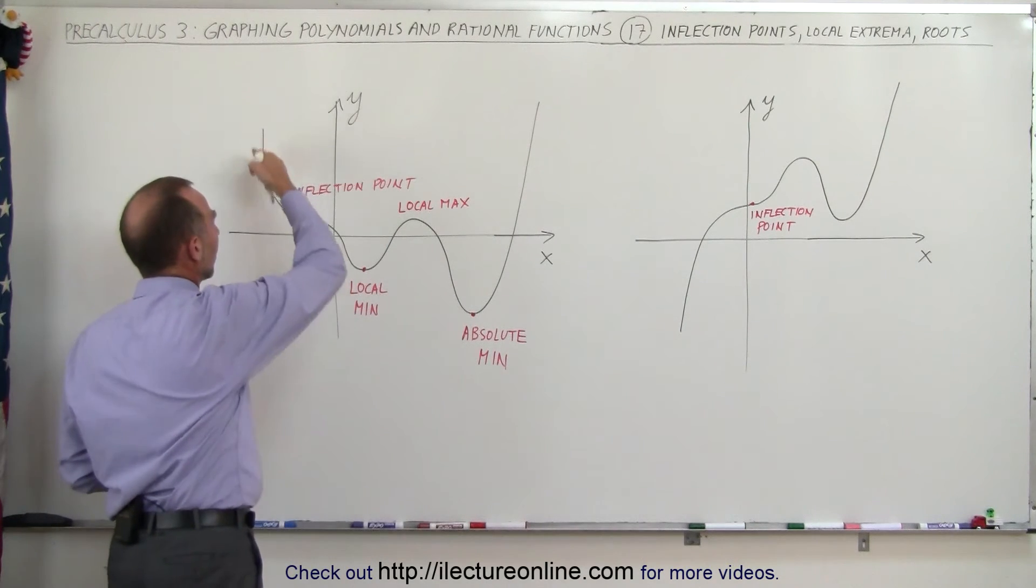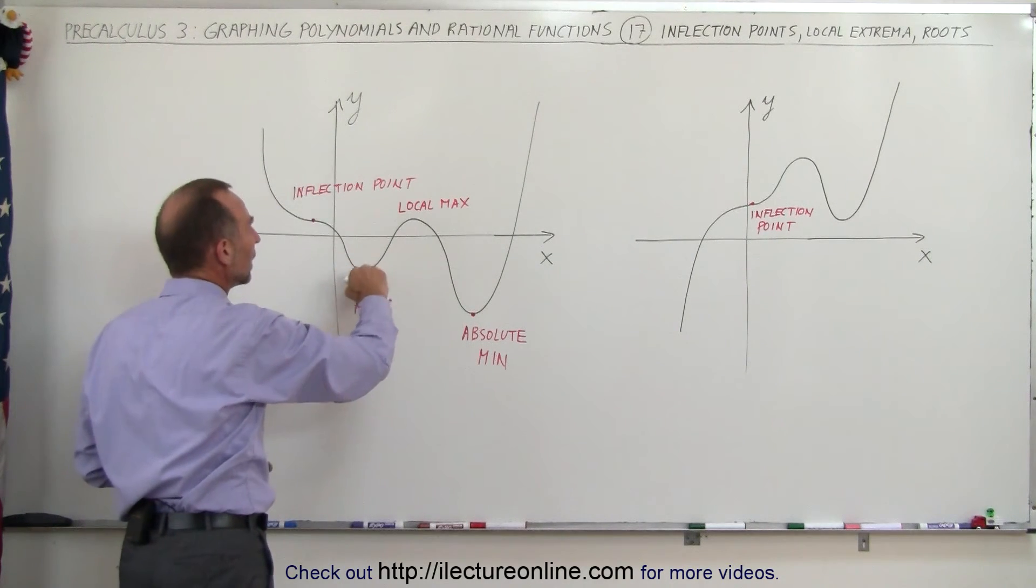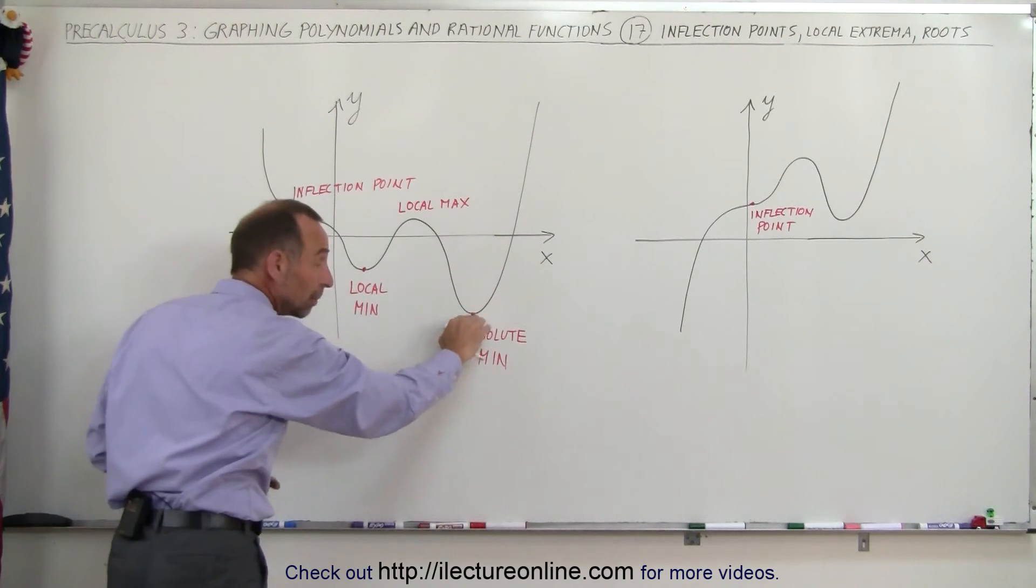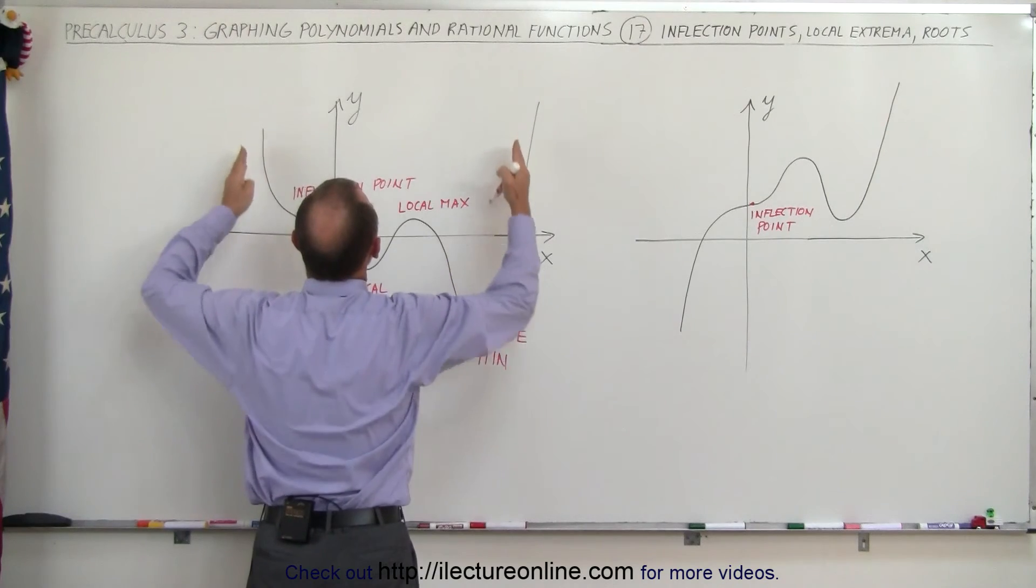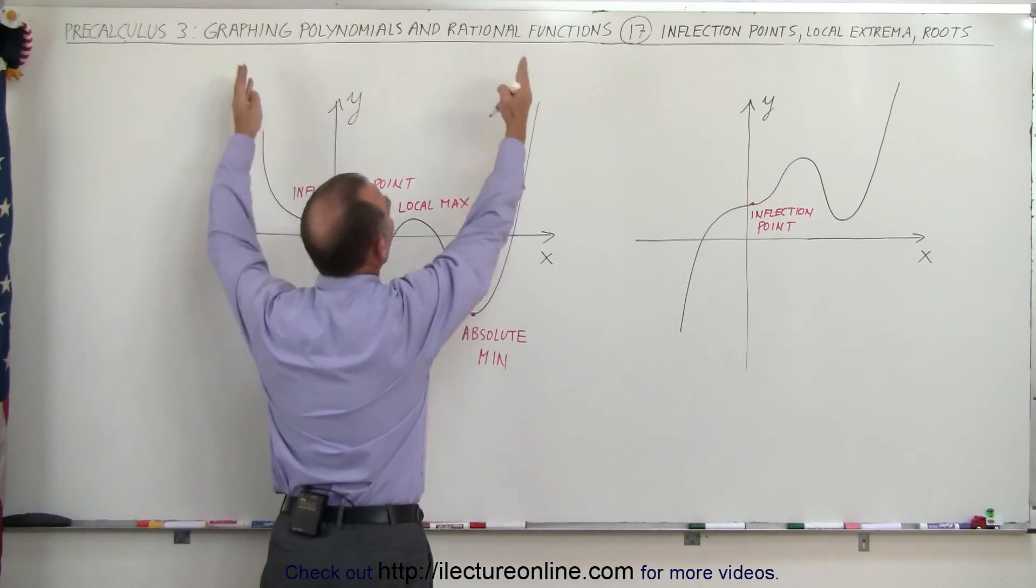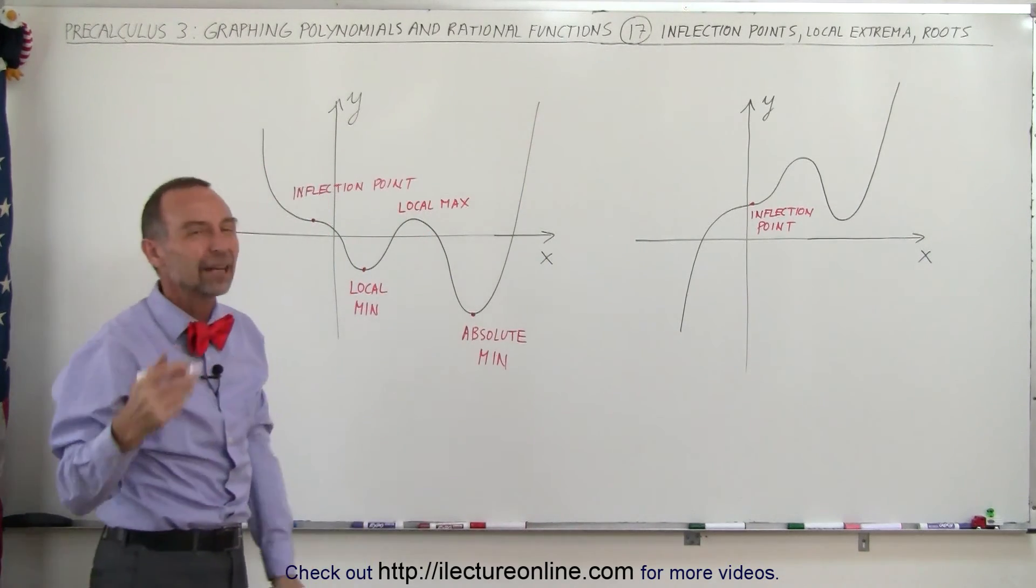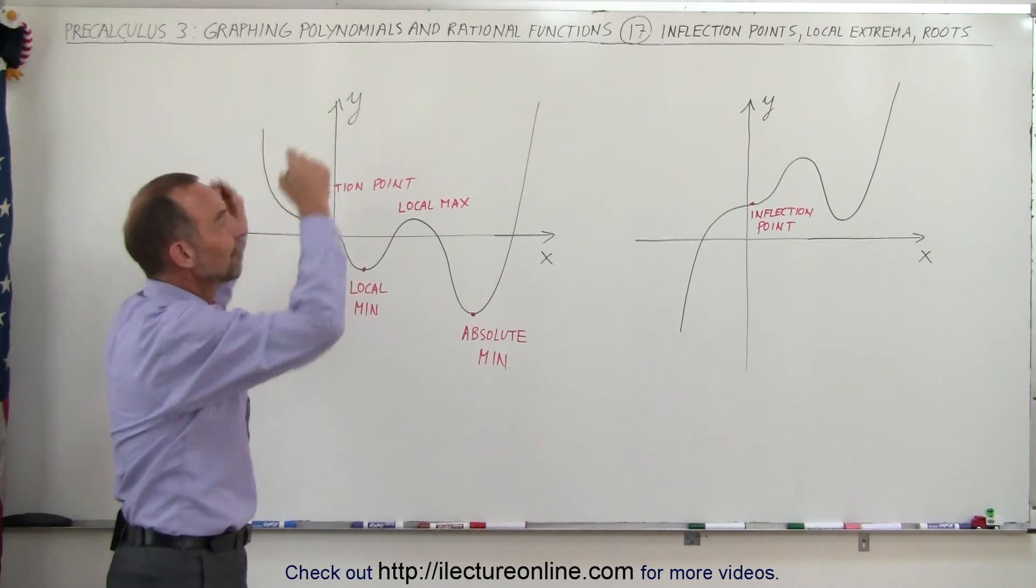So we have an inflection point, a local min, a local max, an absolute min because that's the absolute lowest point on the graph. And then notice on both sides here it goes to the absolute maximum point in the y direction, but of course we can't identify what that is because it goes up to infinity.